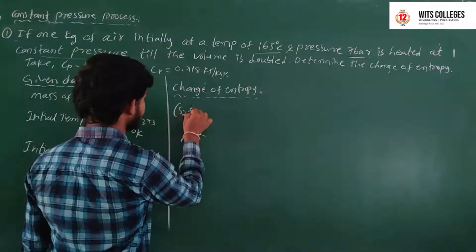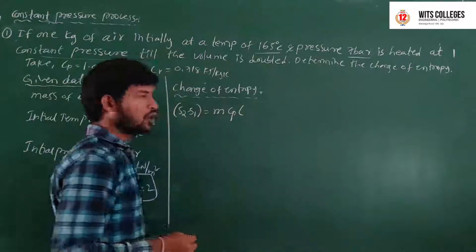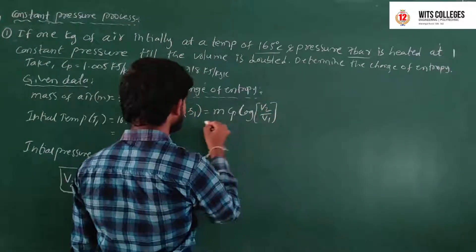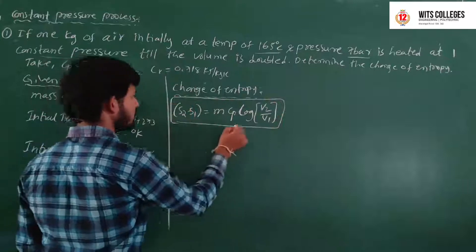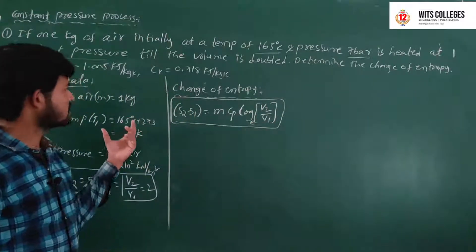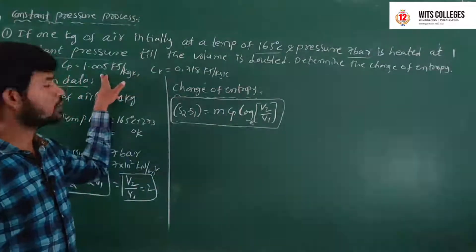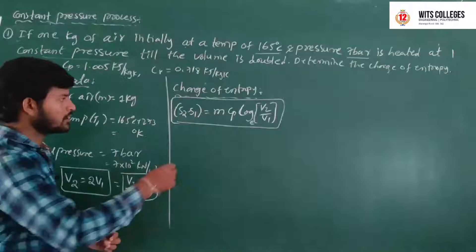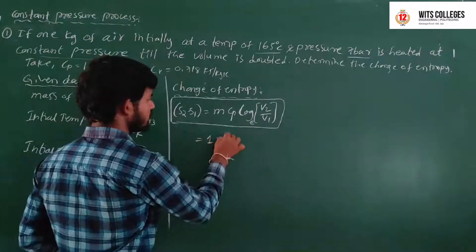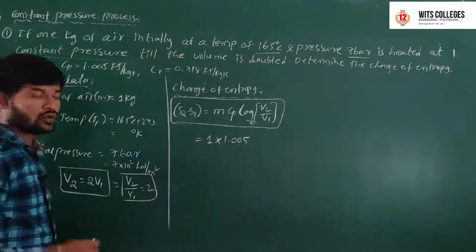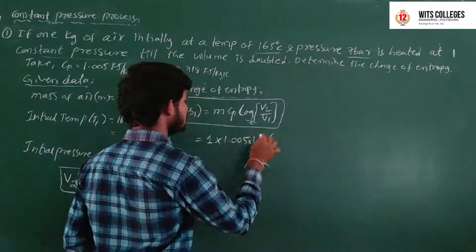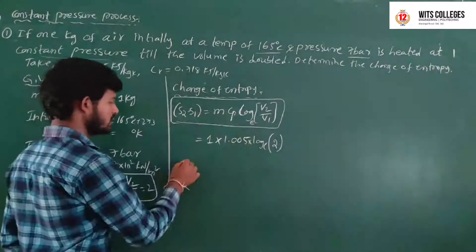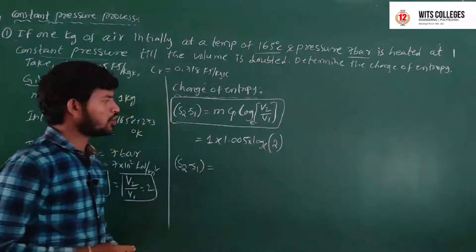We know the formula for change of entropy in the constant pressure process: S2 minus S1 equals M into CP into ln(V2/V1). Substituting all given values: M = 1, CP = 1.005, V2/V1 = 2. So S2 minus S1 equals 1 into 1.005 into ln(2).